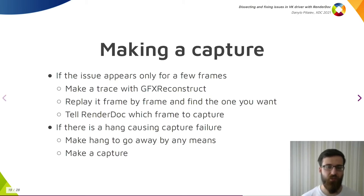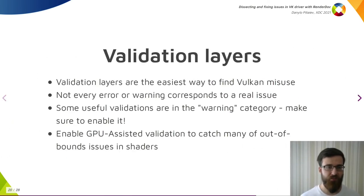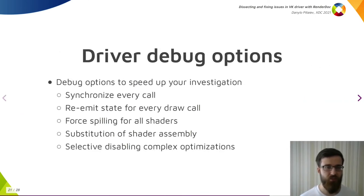That's all about RenderDoc. What else could we do besides inspecting the frame? Before even inspecting the frame, it is a good idea to use Vulkan validation layers to find whether application violates the spec, and there is no point in investigating further. Validation layers are the easiest way to find Vulkan misuse and should be the first thing you would try. However, not every error or warning corresponds to a real issue, and it may be hard to distinguish them. Though they could tell which places to check first with RenderDoc. Some useful validations are in the warning category, which isn't enabled by default. Make sure to enable it. The last option is to enable GPU-assisted validation to catch out-of-bounds issues in the shaders, if there are any.